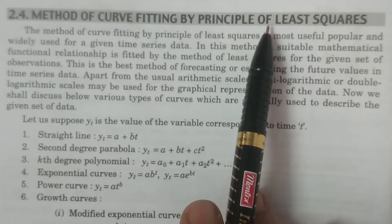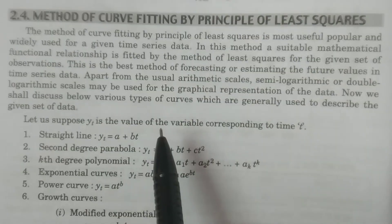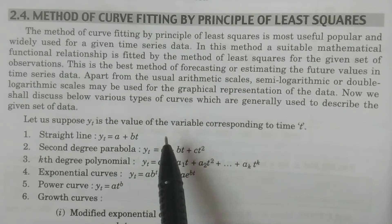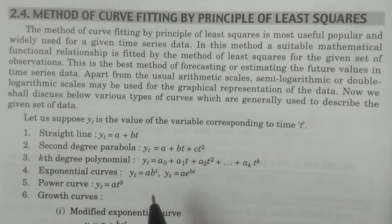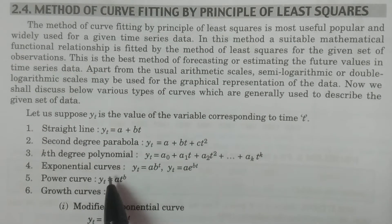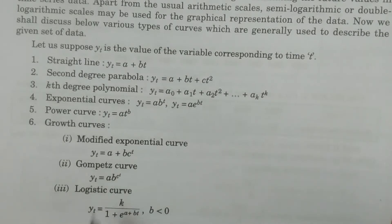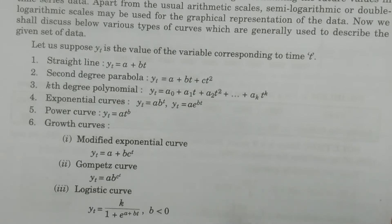By using the principle of least squares, we fit one particular functional mathematical relationship. We have time, and we fit a functional mathematical relationship in any particular form — for example, a straight line, a parabola, an nth degree polynomial, exponential curve, power curve, growth curves, modified exponential curve, complex curve, and logistic curve.